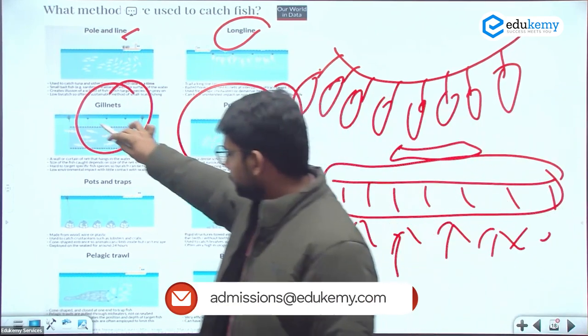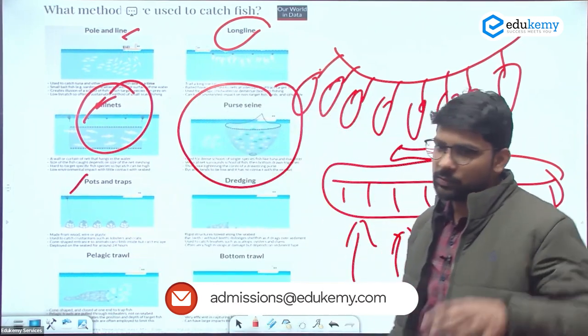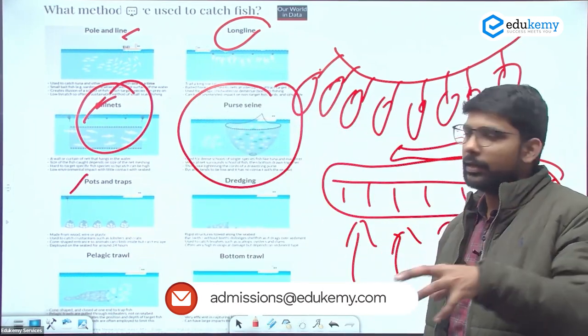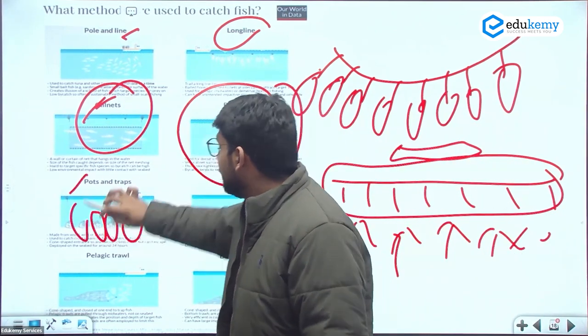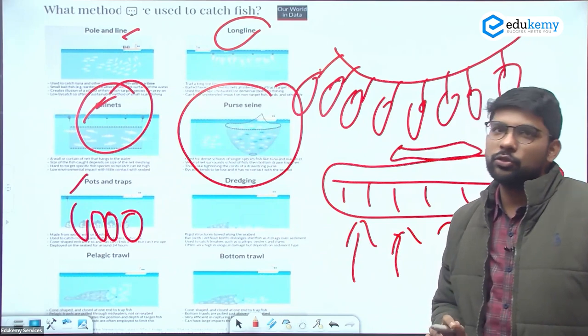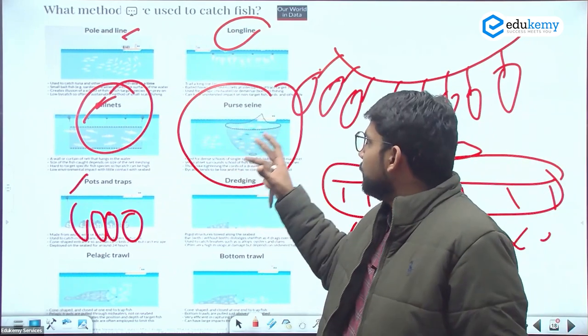This is known as gill nets. Then specifically about ports and traps - they're smaller nets which we're putting into the sea and fish are captured through these nets. So these are the five-six methods used in fishing. You need to know about these specific methods.